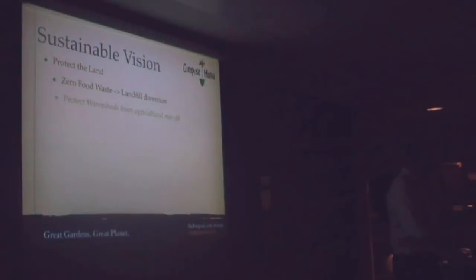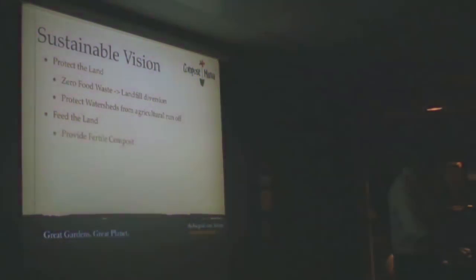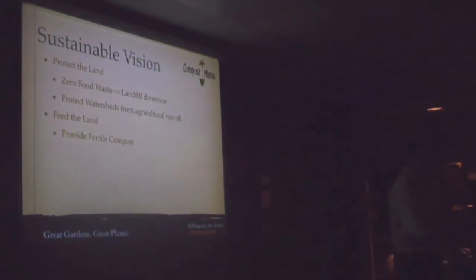Because we take care of our slaughterhouse waste and other waste streams that are very putrescent, we can protect our watersheds from agricultural runoff. We not only protect the land, we also feed the land. We provide a compost, and pig, chicken, and fish feed becomes independent of the price of oil. I think that's very important.